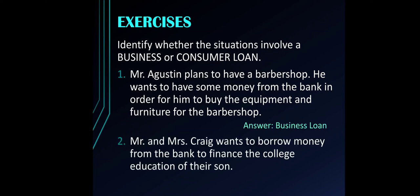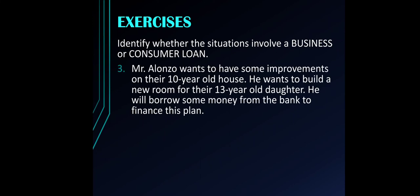Second, Mr. and Mrs. Craig want to borrow money from the bank to finance the college education of their son. The reason for borrowing is for their son's college education, which is a personal or family purpose — hence, this is a consumer loan. Next, Mr. Alonzo wants to make improvements on their 10-year-old house and build a new room for their 13-year-old daughter. He will borrow money from the bank to finance this plan. This is a consumer loan because it is for home improvements — a personal purpose.